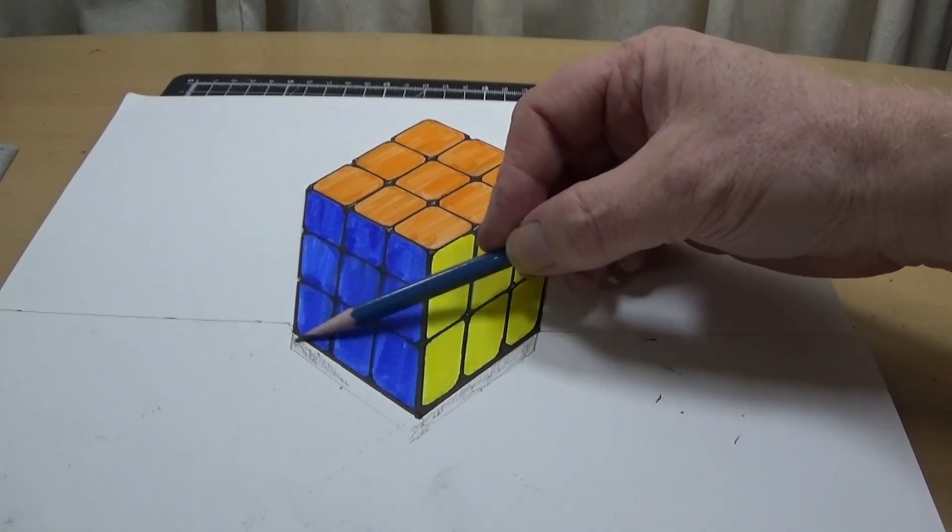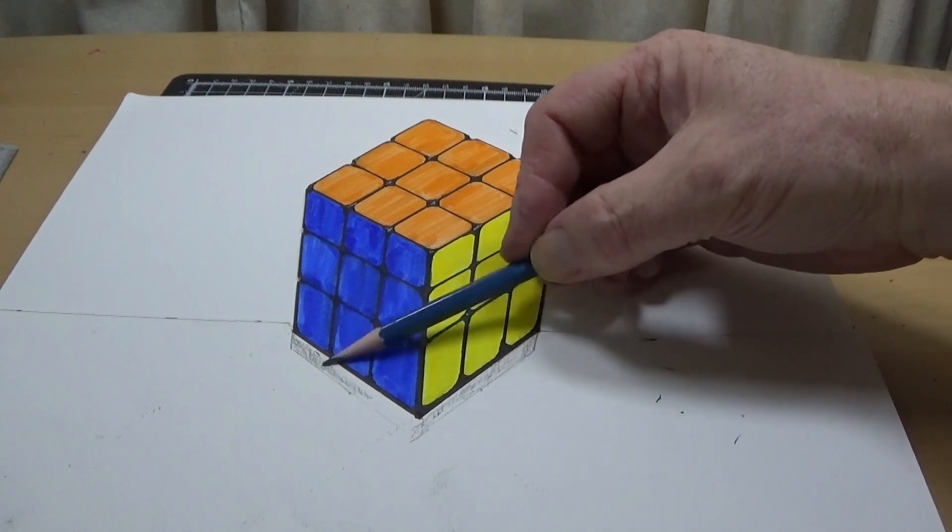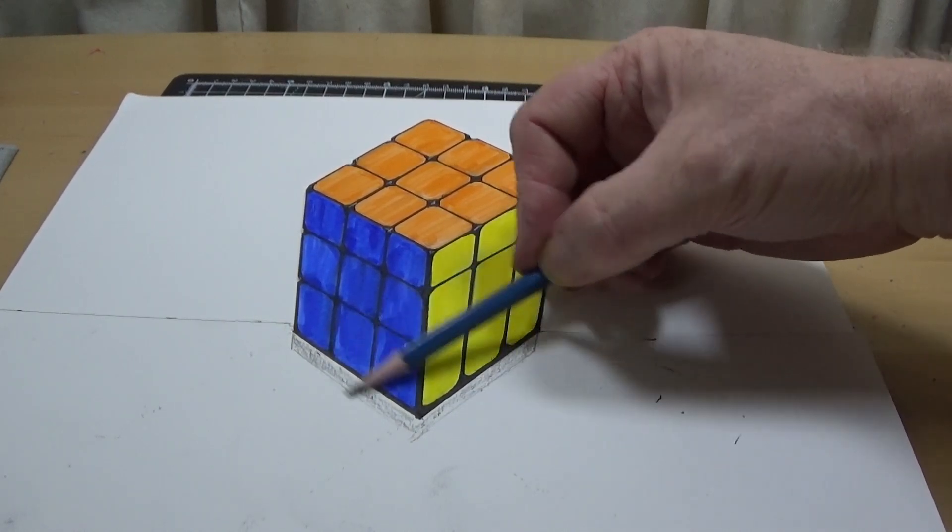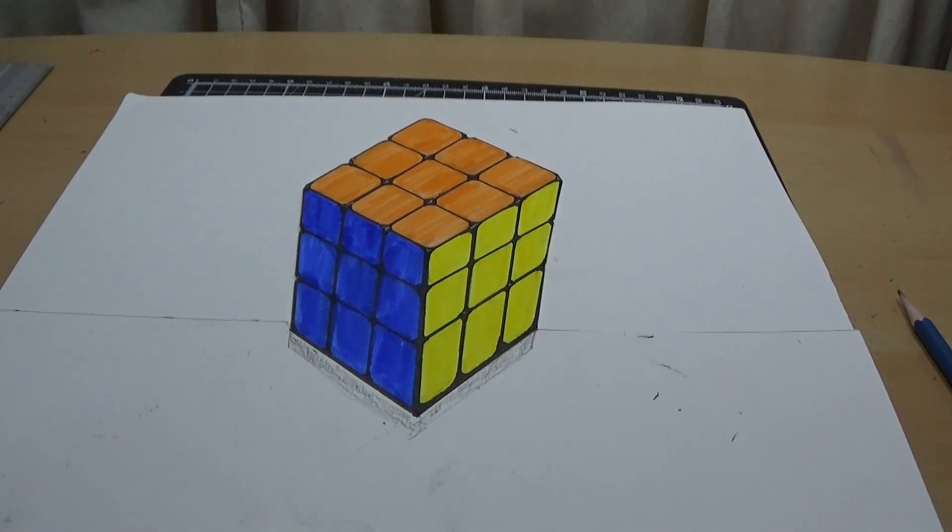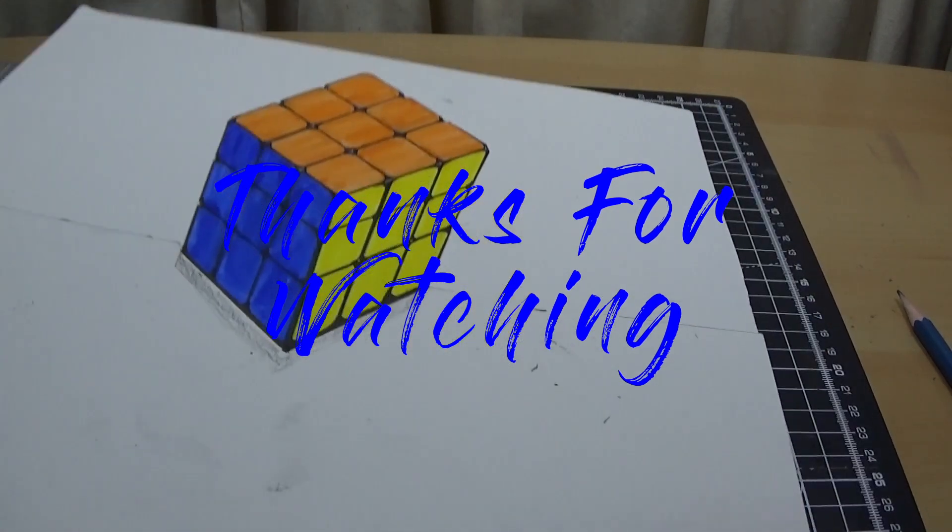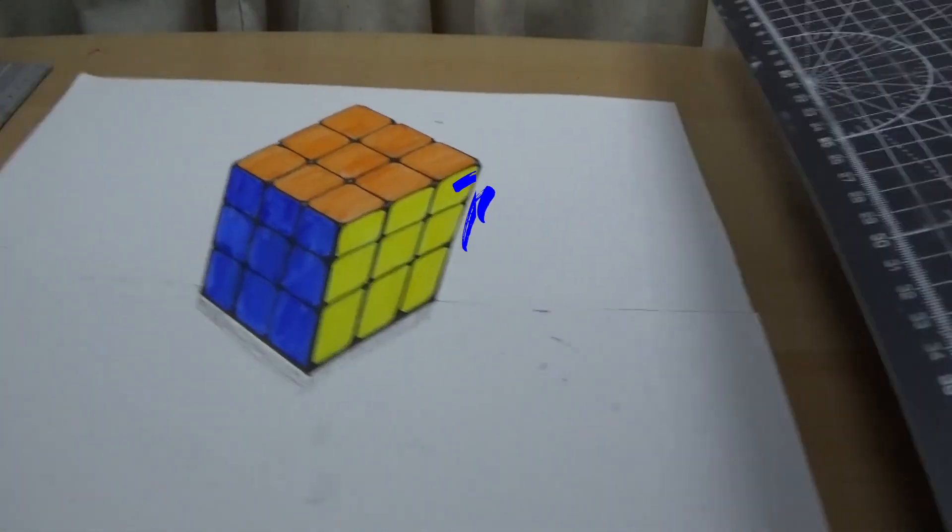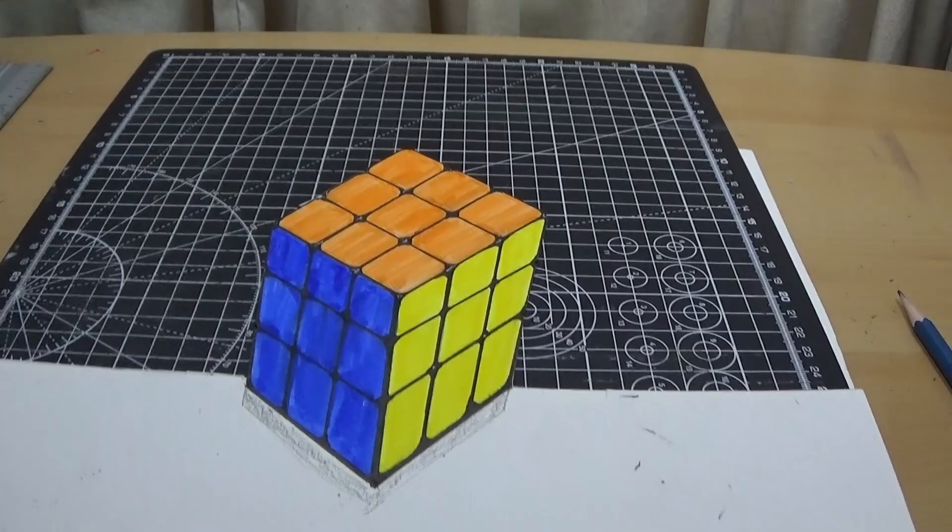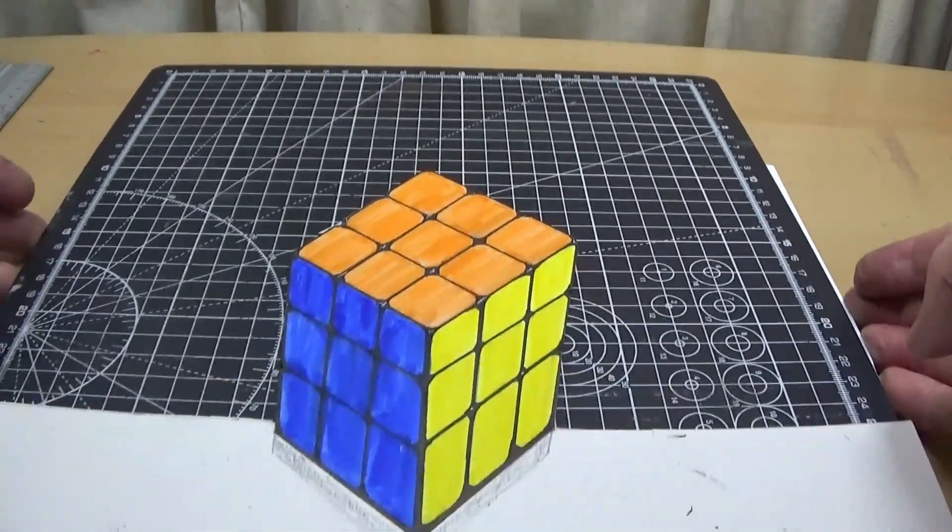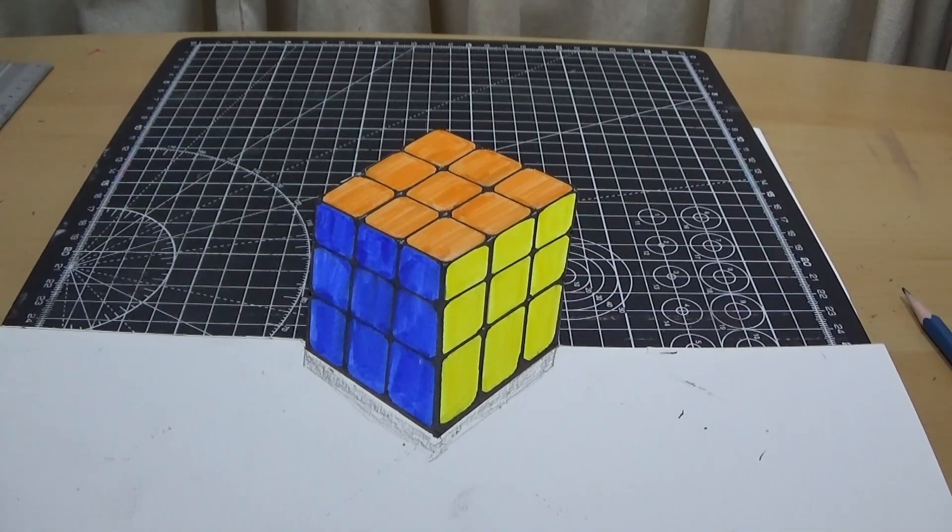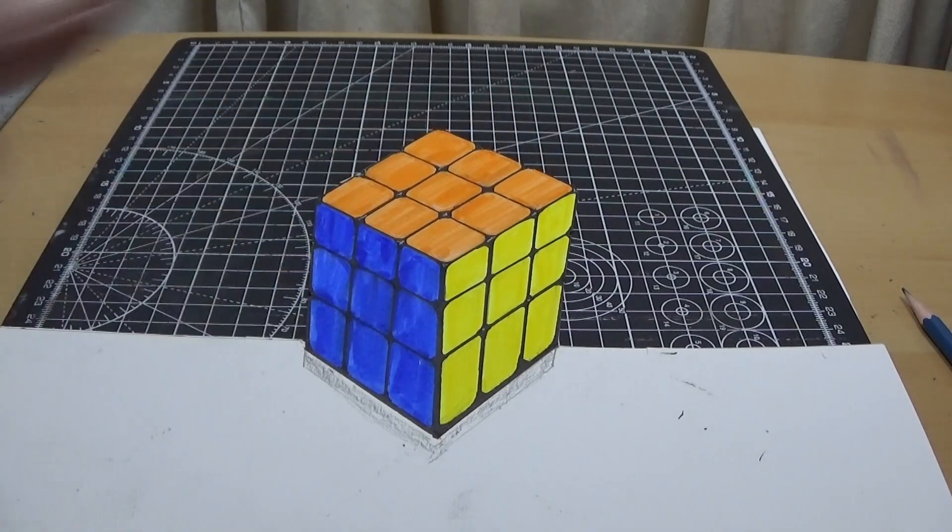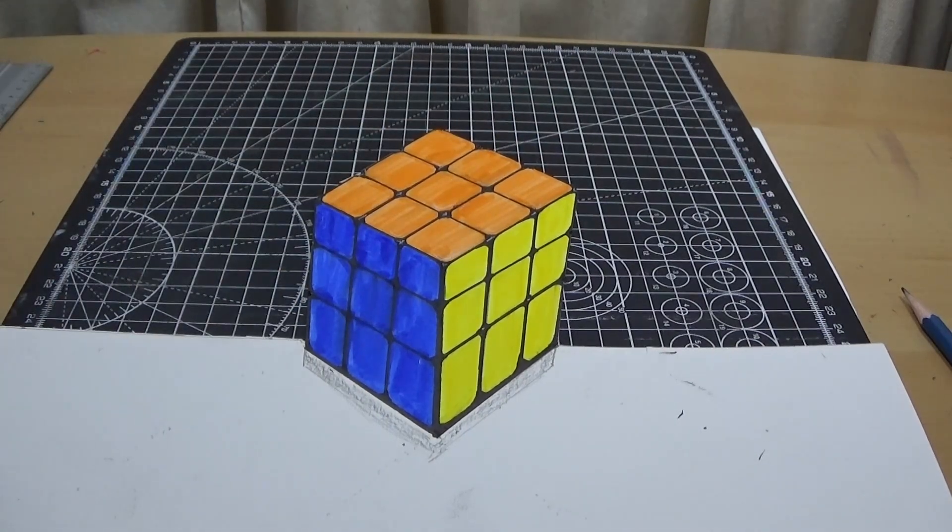So that's my method. It's not the most scientific of methods, but you don't need to do any complicated algorithms or vanishing points or anything like that. And it works. It looks kind of nice. Maybe a little bit distorted, but it's pretty good and I like it. That means you can do it. Anyone can try.